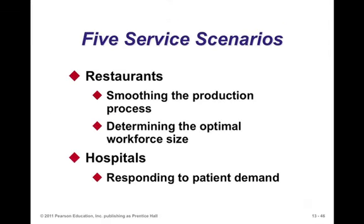In restaurants, you want to smooth production in the kitchen. Restaurants do a lot of prep work ahead of time in slow periods so that when customers arrive, they're not preparing everything from scratch and getting caught unable to deliver meals on time. You want a smooth production rate where customers are waiting an average of five to ten minutes for their meals, not overly long periods because all work is done from scratch.